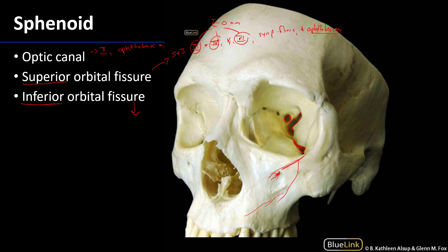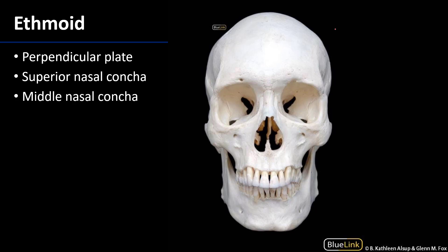Those are the elements of the sphenoid that participate in the orbit. Now let's talk about the ethmoid. Like the sphenoid, the ethmoid is a very secretive bone — probably even more so. Some elements you'll want to know include the perpendicular plate of the ethmoid as well as the superior and middle nasal conchae. We'll also see how the orbit and the nasal cavity relate to one another in terms of the neurovasculature held in common between these two regions.